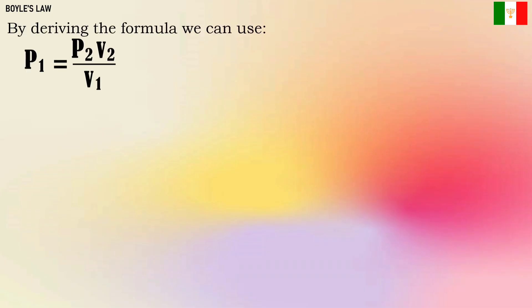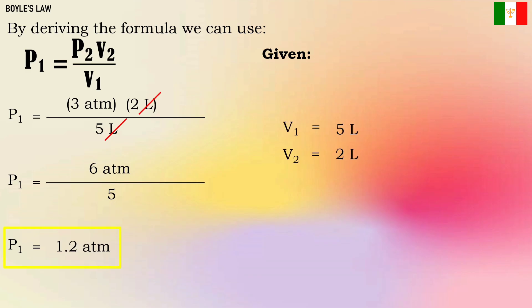Let's proceed to the formula. P₁ = P₂V₂/V₁. Let's substitute. Cancel the liter and solve. 3 times 2 is 6 over 5. The answer is 1.2 atmosphere. Let's check if our answer is correct. Our volume decreased. Our pressure increased. Therefore, our answer for P₁ is correct.